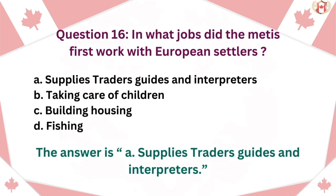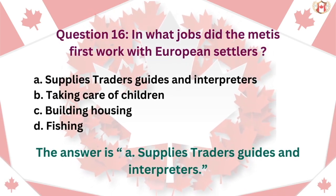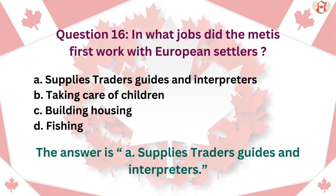Question 16: In what jobs did the Métis first work with European settlers? A. Supplies, traders' guides and interpreters, B. Taking care of children, C. Building housing, D. Fishing. The answer is A. Supplies, traders' guides and interpreters.